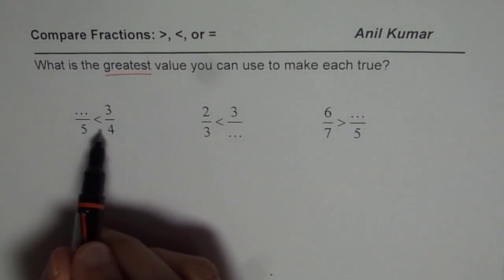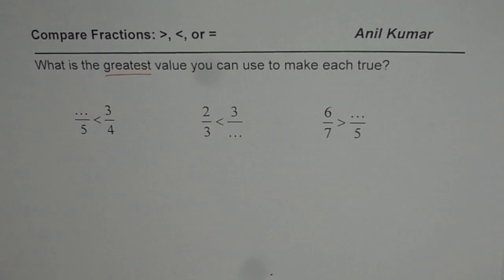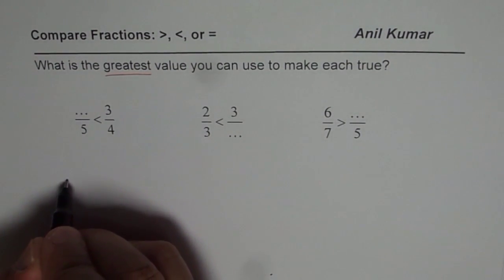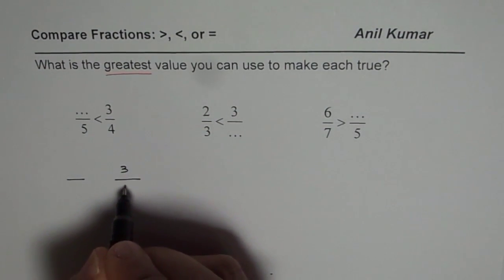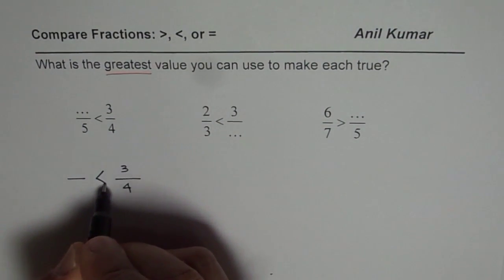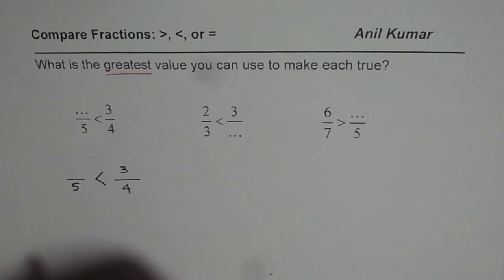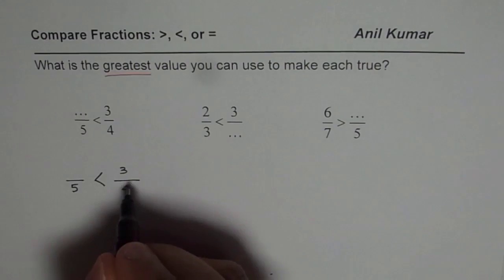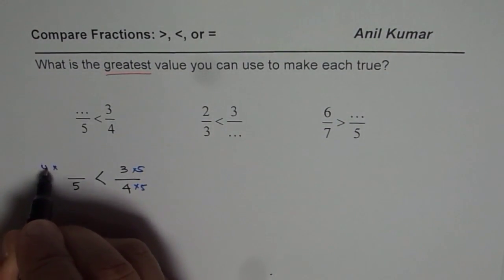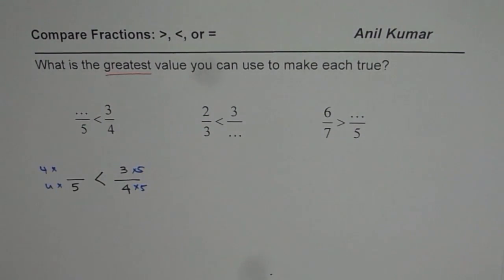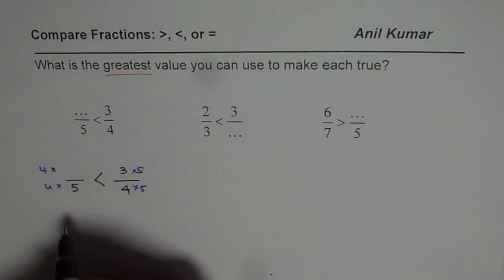One way is, we can make the denominators common. So let us make the denominators common and rewrite the question. So what we have here is, we have 3 over 4 here, we want that to be greater than something over 5. To make the common denominators, I will multiply this by 5. And I will multiply these by 4. So if I do that, what do I get?